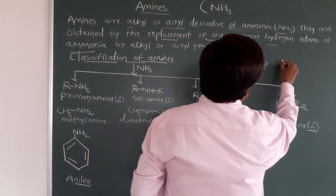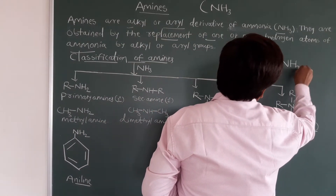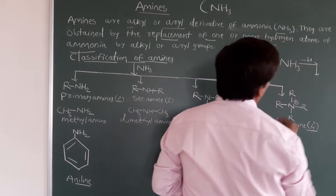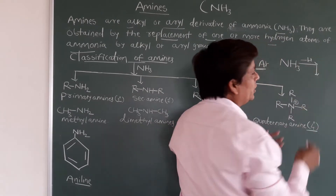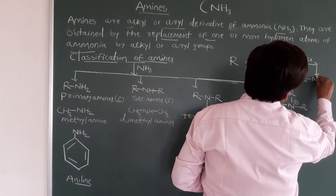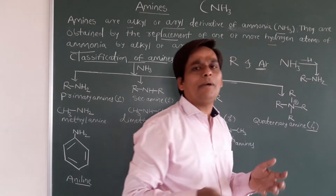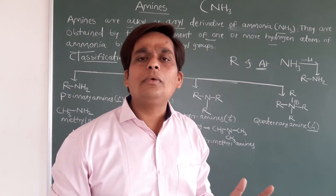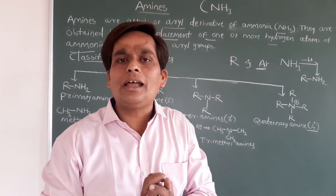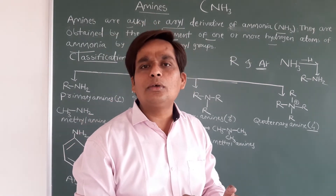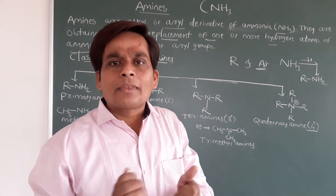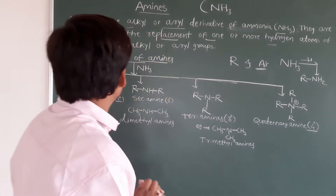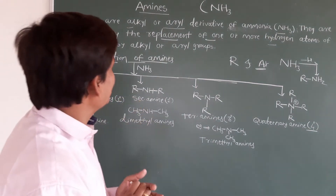Take NH3. From this NH3, if you remove one hydrogen and substitute one R group, you get R-NH2 — nothing but an amine. This is the definition of amines. From ammonia, if you remove one hydrogen and substitute any alkyl or aryl group, you will simply get an amine.